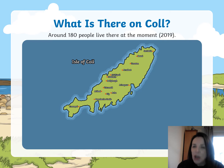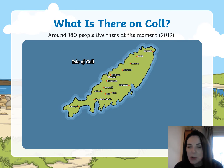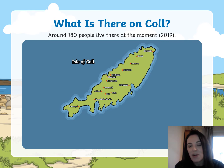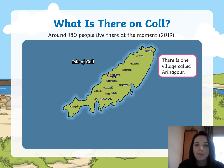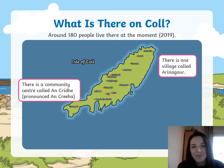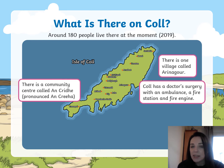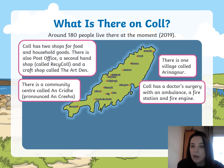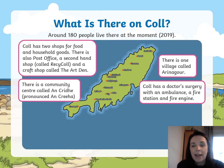So what is there on Coll? Now, this information is about two or three years out of date, so I wonder what it's like there now. But two or three years ago, around 180 people lived there — that's not very many people at all. If you think about it, there are more than 180 children in our school, but on this one island there are fewer people than that. There is one village called Arinagour, and a community centre called Achamore. Coll has a doctor's surgery with an ambulance, a fire station, and a fire engine. It has two shops for food and household goods. There's also a post office, a second-hand shop called Recycle — I like that — and a craft shop called The Art Den.